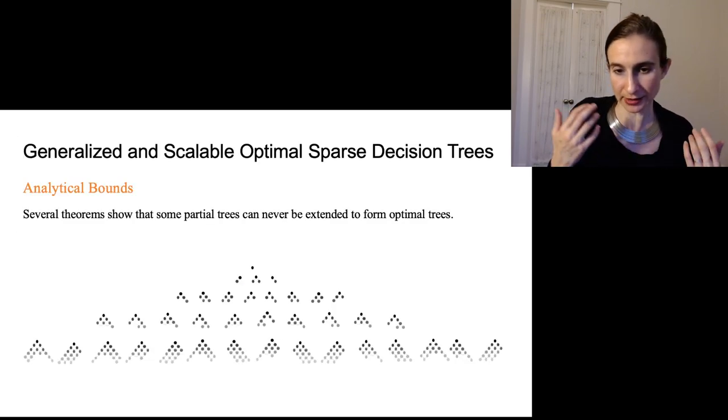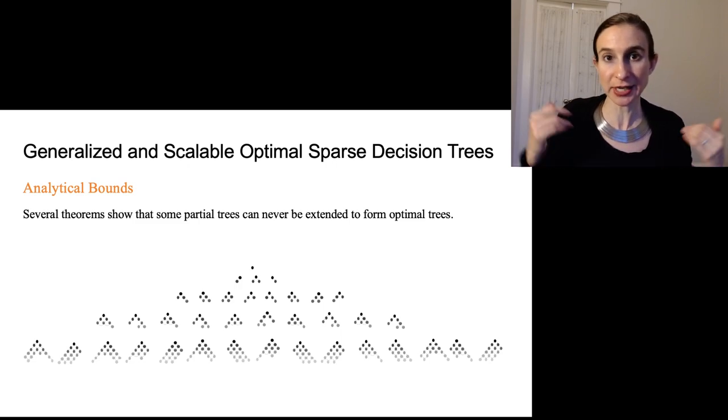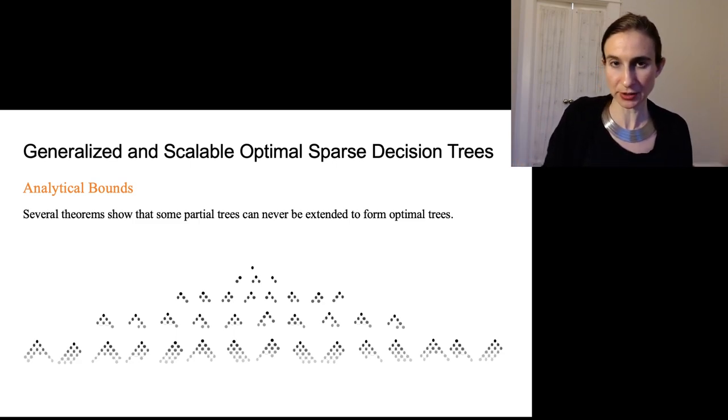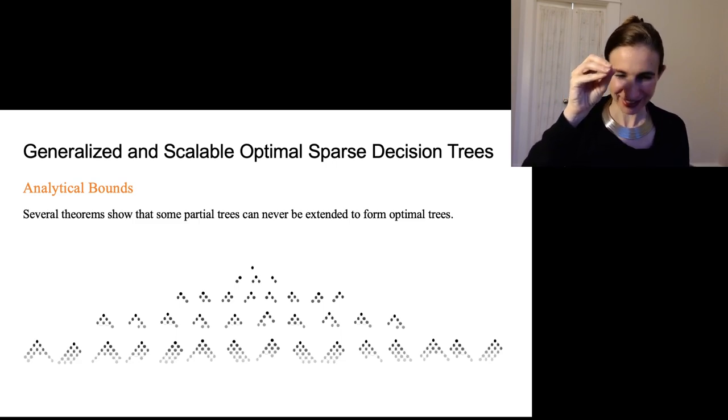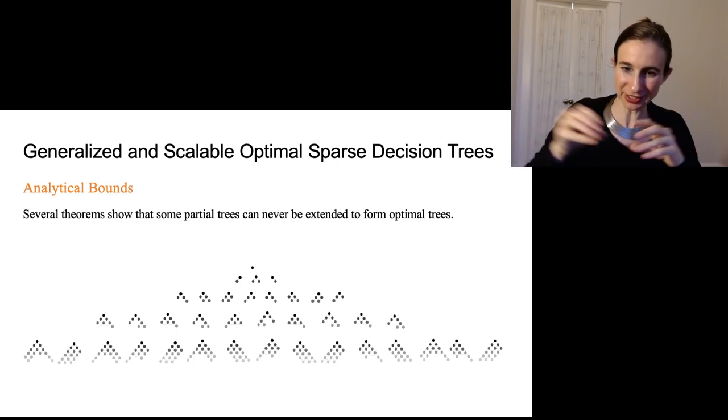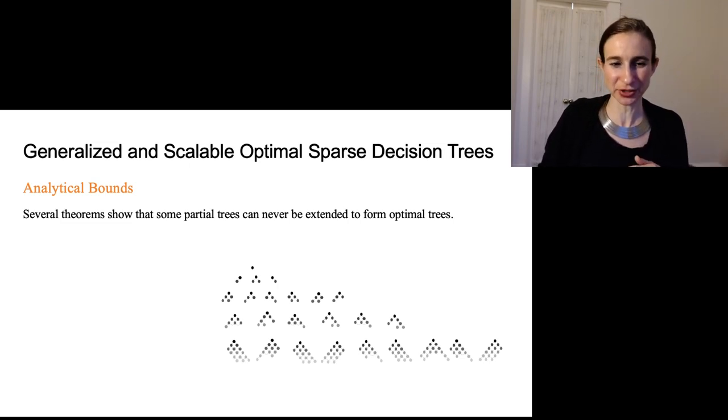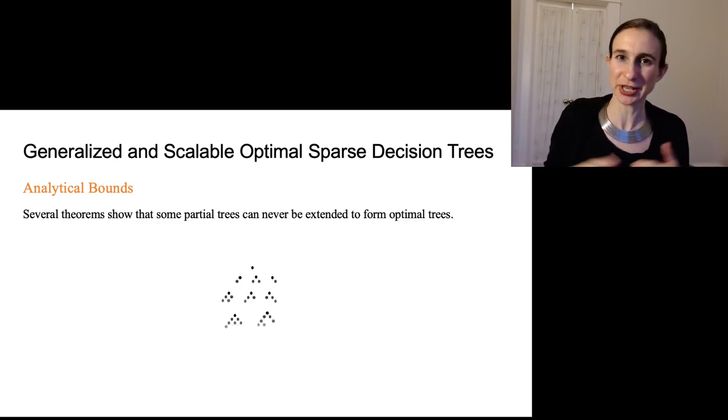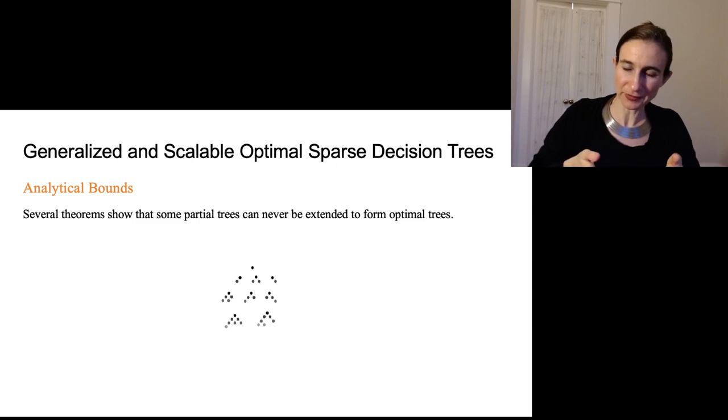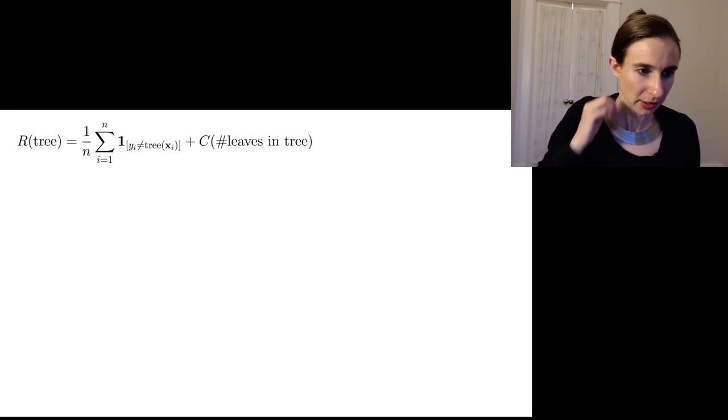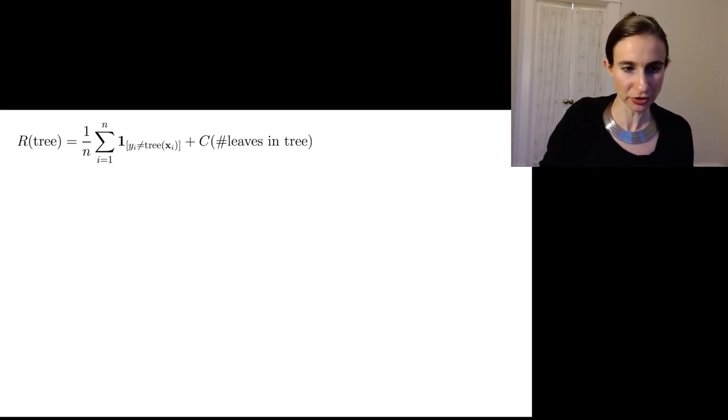Okay, so it actually has several theorems that show that some partial trees can never be extended to form full trees that are actually optimal. So this is an example of the search space. So the search space, it has trees that are tiny, and then you could think about its children like all possible children and children of that and so on and so forth. And these theorems, they actually take off chunks out of the search space so that you never have to actually search that part of the space. So it either enumerates the whole space or it provably removes those whole parts of the space. And I'm going to show you kind of one of the probably the simplest bound in this collection of bounds that GOSDT uses.